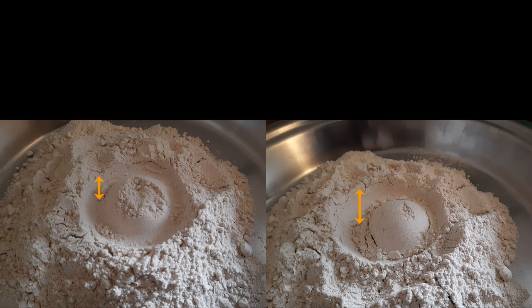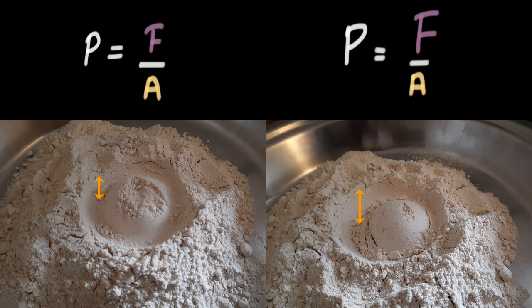So if you want to explain this using the words pressure, force, and area — in both cases the contact area between the flour and the bottle was the same. But the force was different. The force was less when the bottle was empty, so there was some pressure exerted on the flour. But the force was more when the bottle was full of water, so there was more pressure in the second case. And that's why we see a greater depth in the mark that the water bottle left.